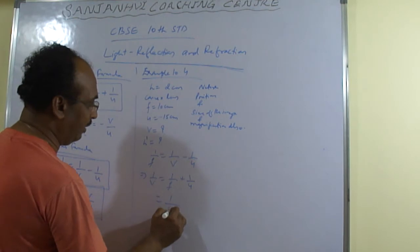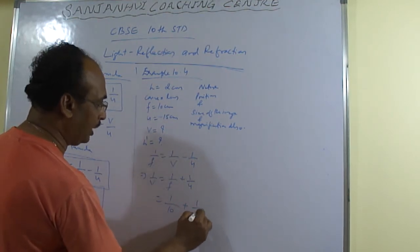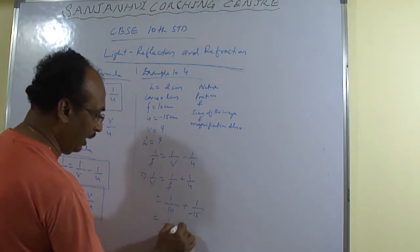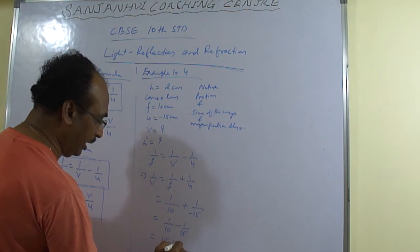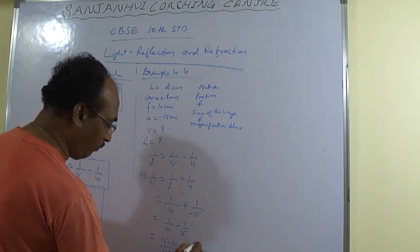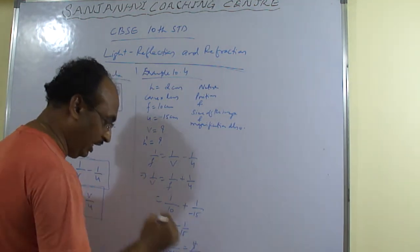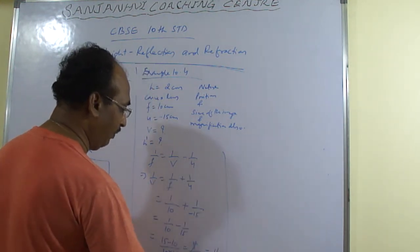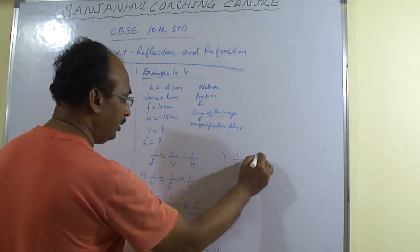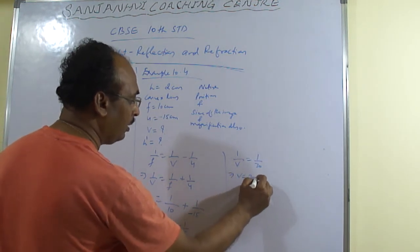So 1 by f is 10 plus 1 by u, so 1 by minus 15. So 1 by 10 minus 1 by 15 is given to what? 15 minus 10 divided by 10 into 15 is equal to 5 by 10 into 15. Then 5 to so 30, 1 by 30. So this is given to what? 1 by v is equal to 1 by 30. Thereby v is equal to 30 cm.